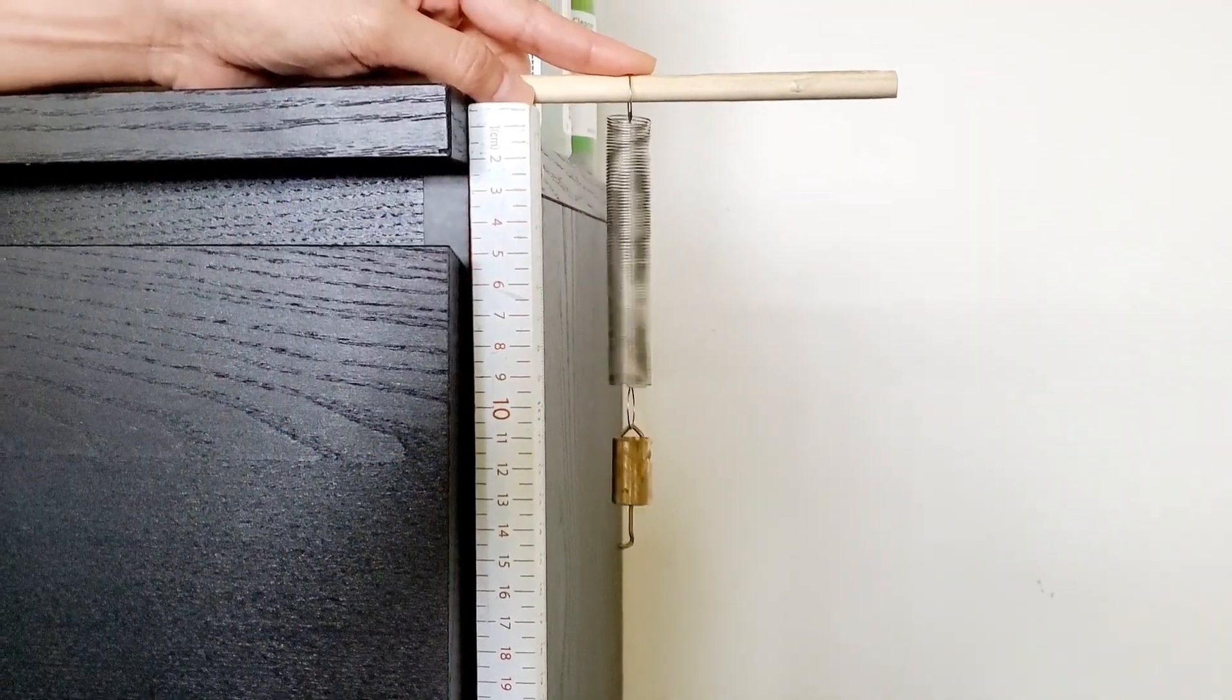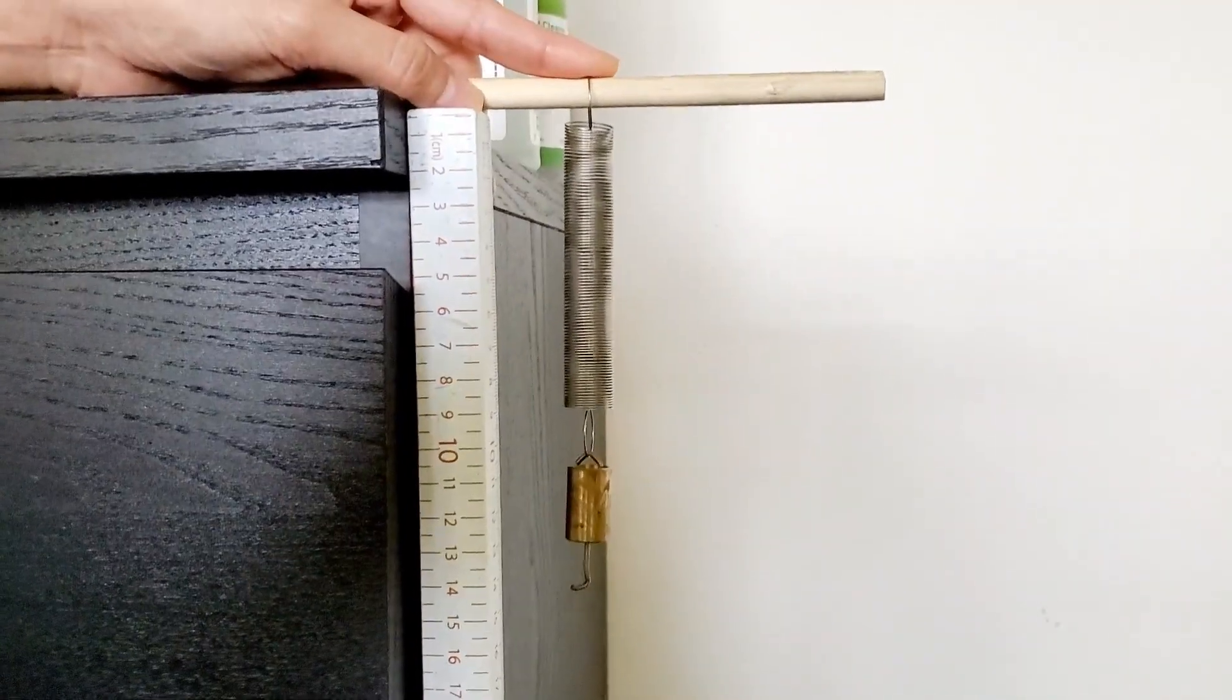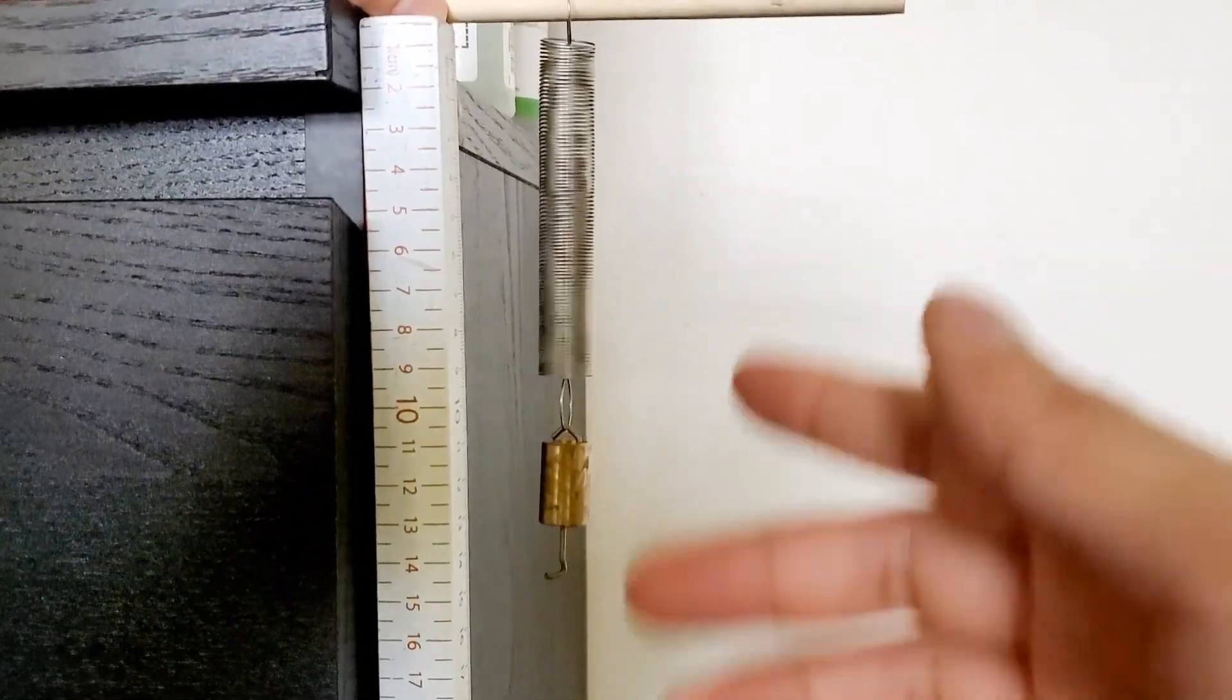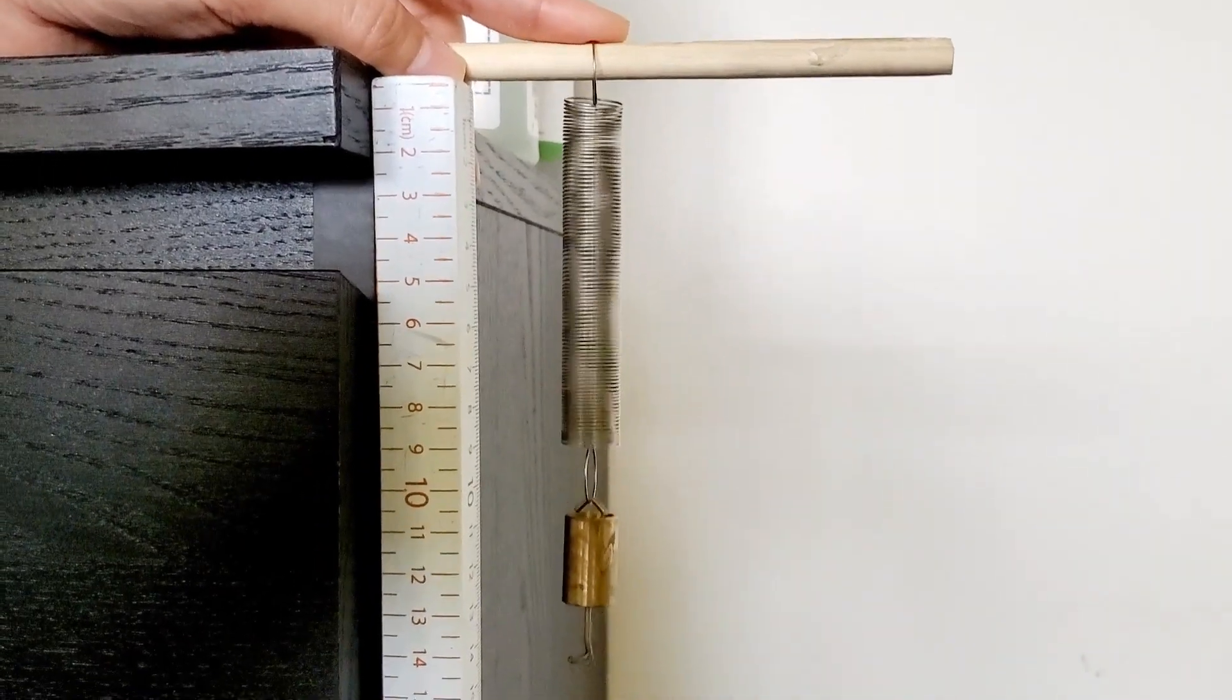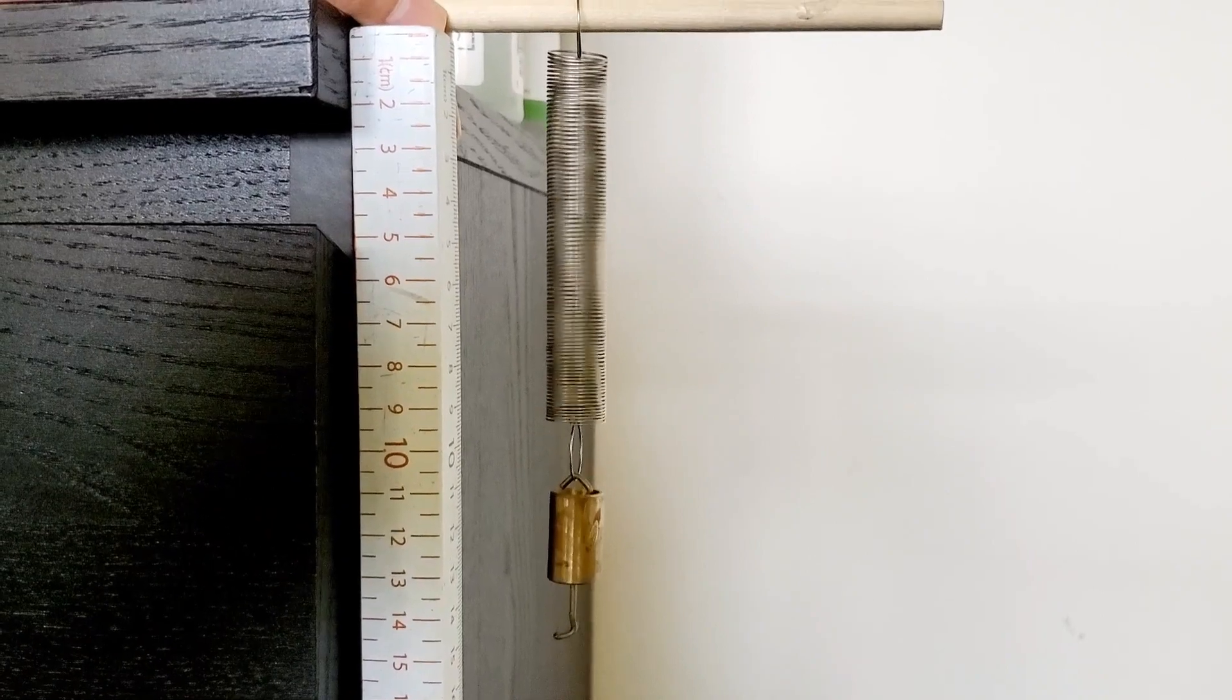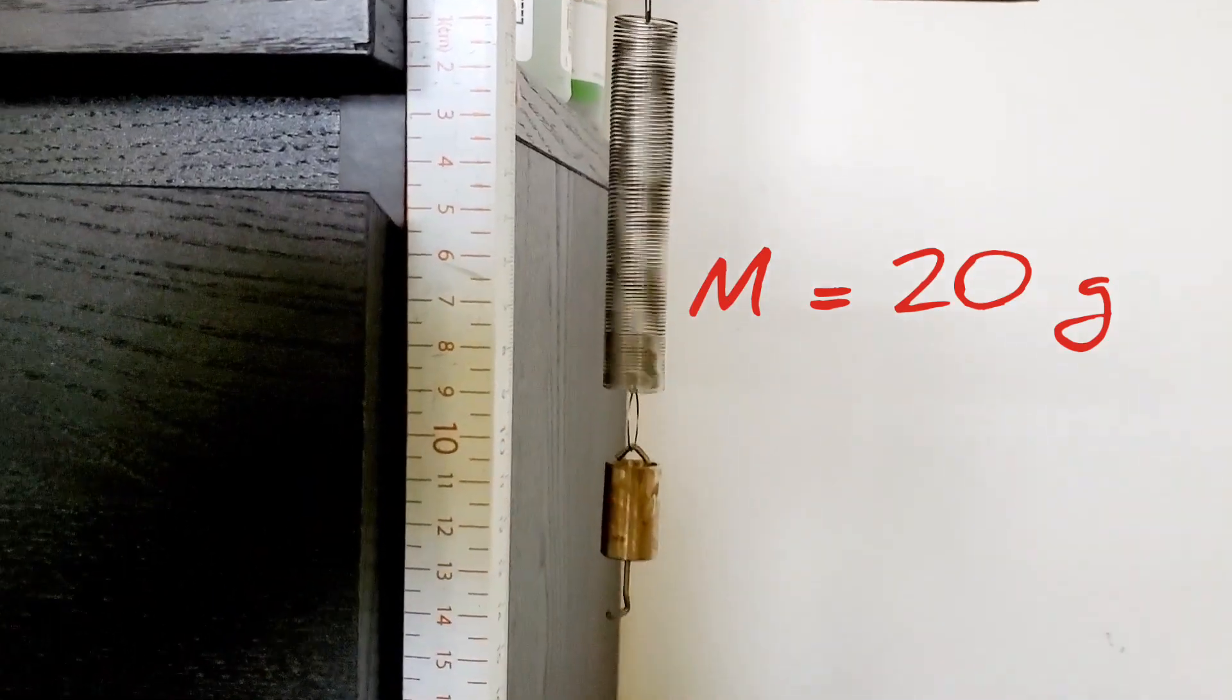Okay, for the second part of this project, we're going to be looking at different masses and how they affect the oscillation or the period of the pendulum. So I'll let it oscillate a few times. You can then figure out how to find the period of the pendulum, and once you have the period of the pendulum, go ahead and solve for the spring constant. So this is the first mass that we're using, and this mass is 20 grams.